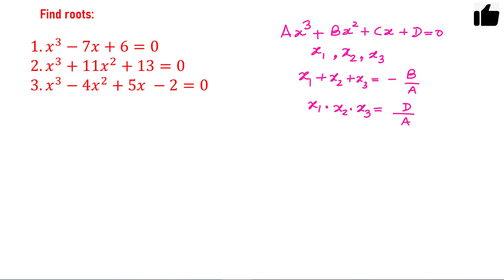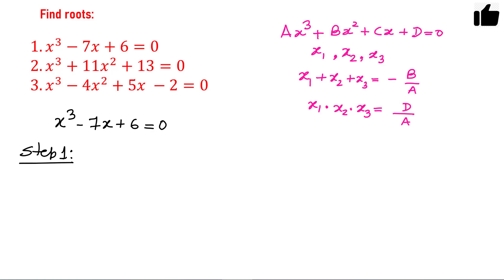I will use this result to solve the problems. Consider the first problem: x³ minus 7x plus 6 equals zero. This is a cubic equation. Writing it in standard form: 1 times x³ plus 0 times x² plus minus 7 times x plus 6 equals zero.